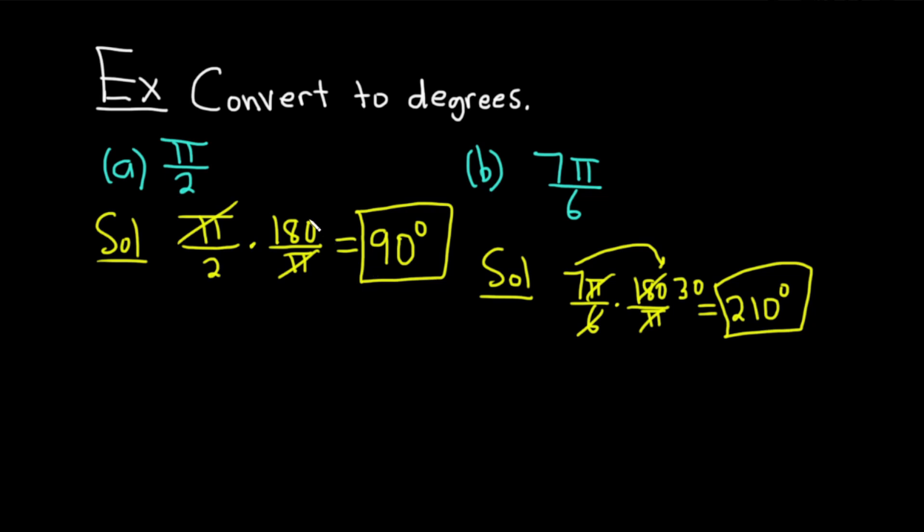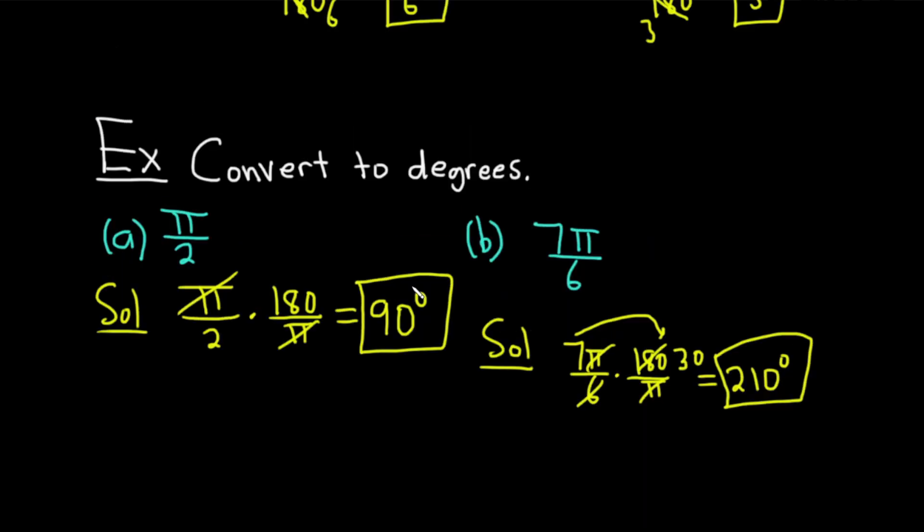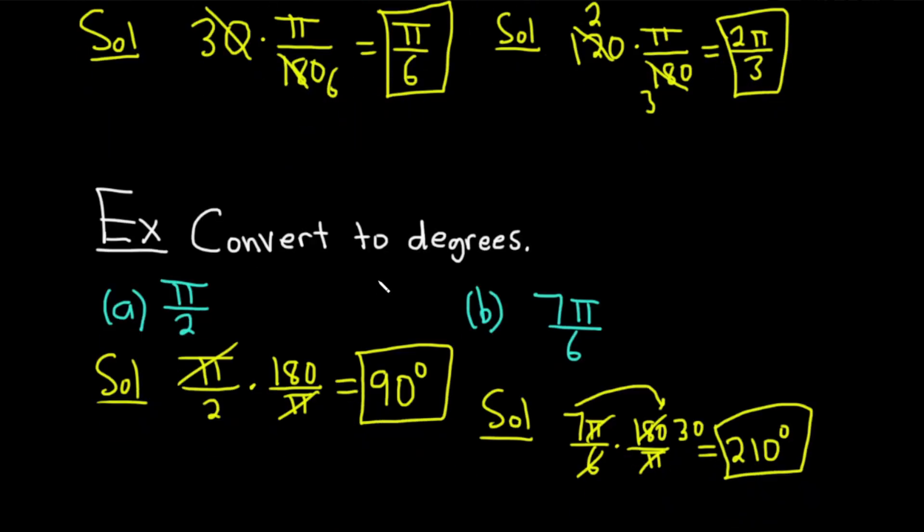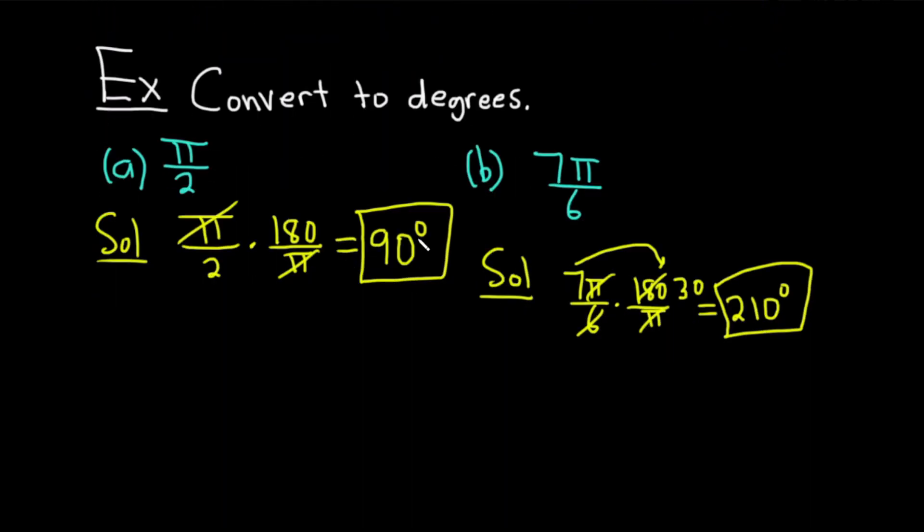So, whenever converting from radians to degrees, you basically always just multiply by 180 over pi. And just to recap, whenever you're converting from degrees to radians, you multiply by pi over 180. Let's go ahead and do something a little bit different.